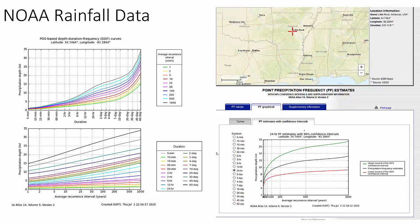Using the NOAA rainfall data site, you can place a cursor on a map, zoom into a location, and it will automatically calculate precipitation depths for that location for durations at recurrence intervals up to a thousand years. For example, at a site in Little Rock, a 24-hour 1000-year exceedance event is about 14 inches, while a one-year event is about 4 inches. Fayetteville's two-year event was about 4.1 inches — Little Rock is a little wetter.